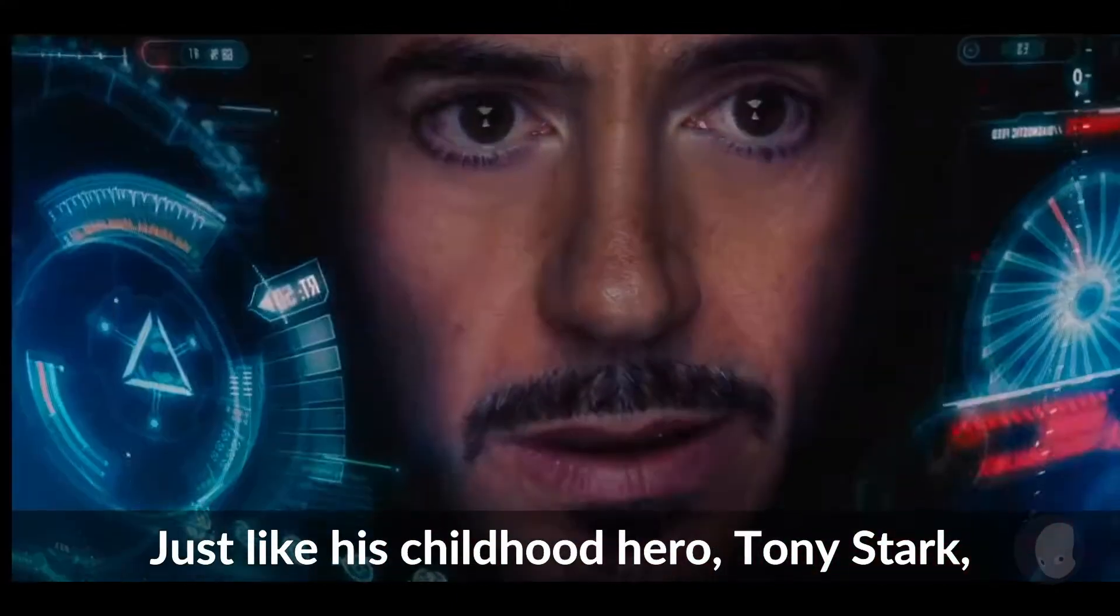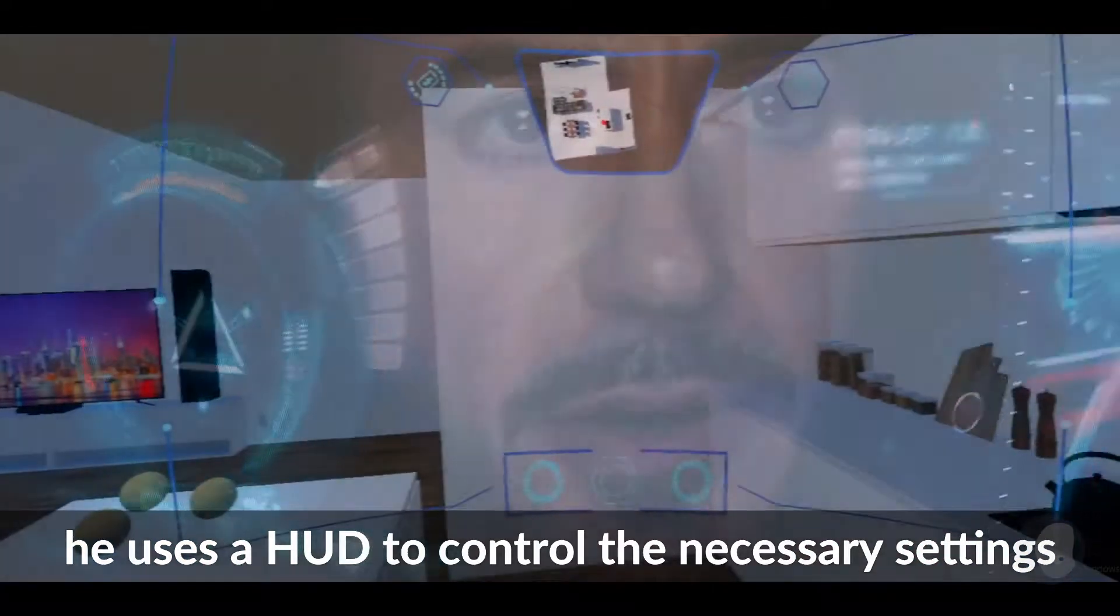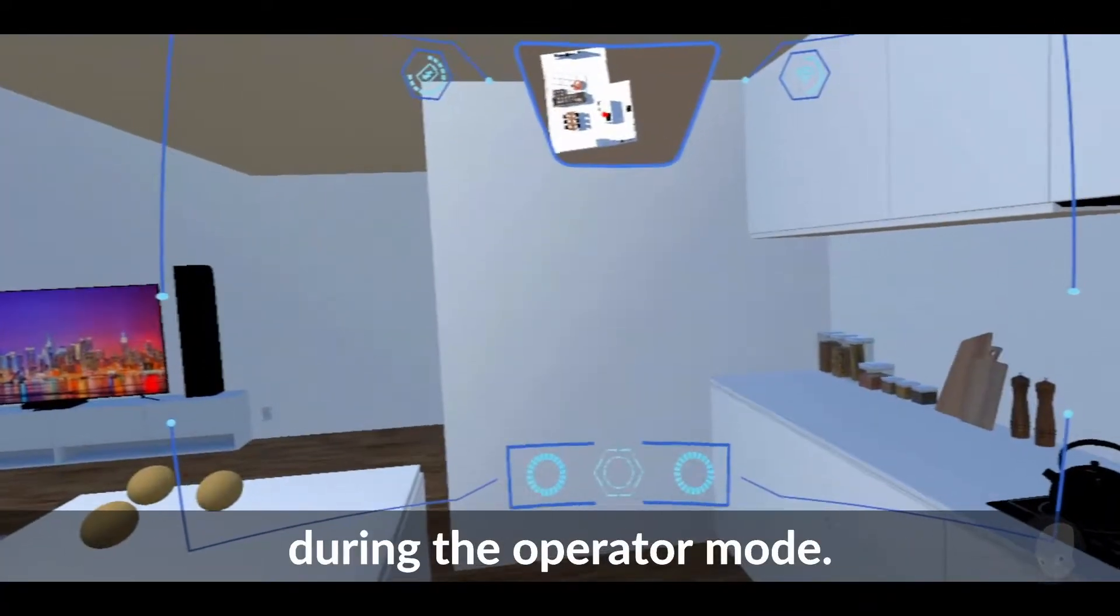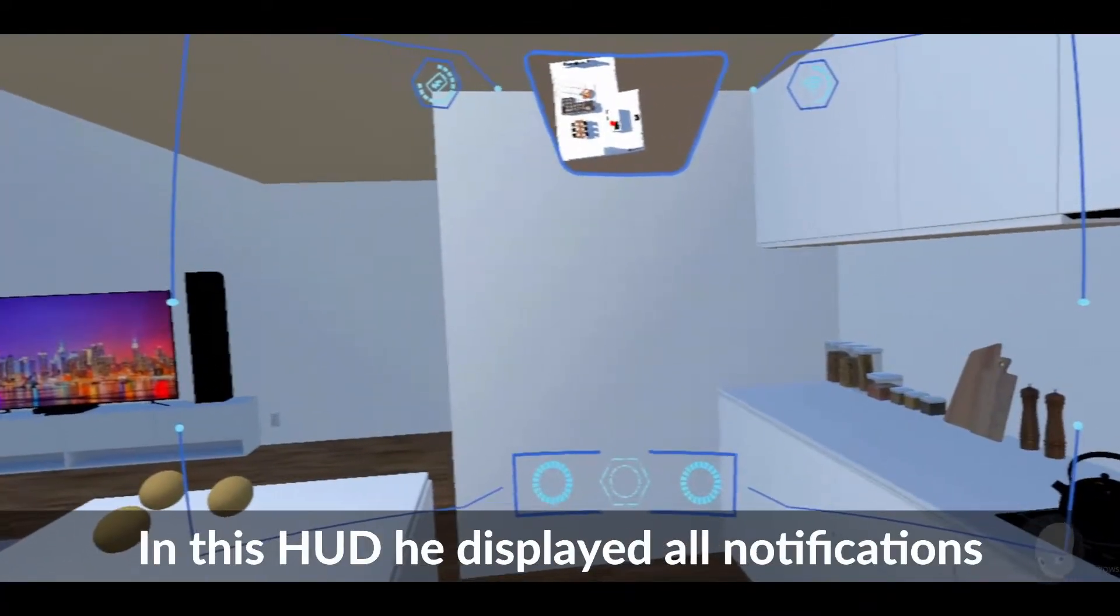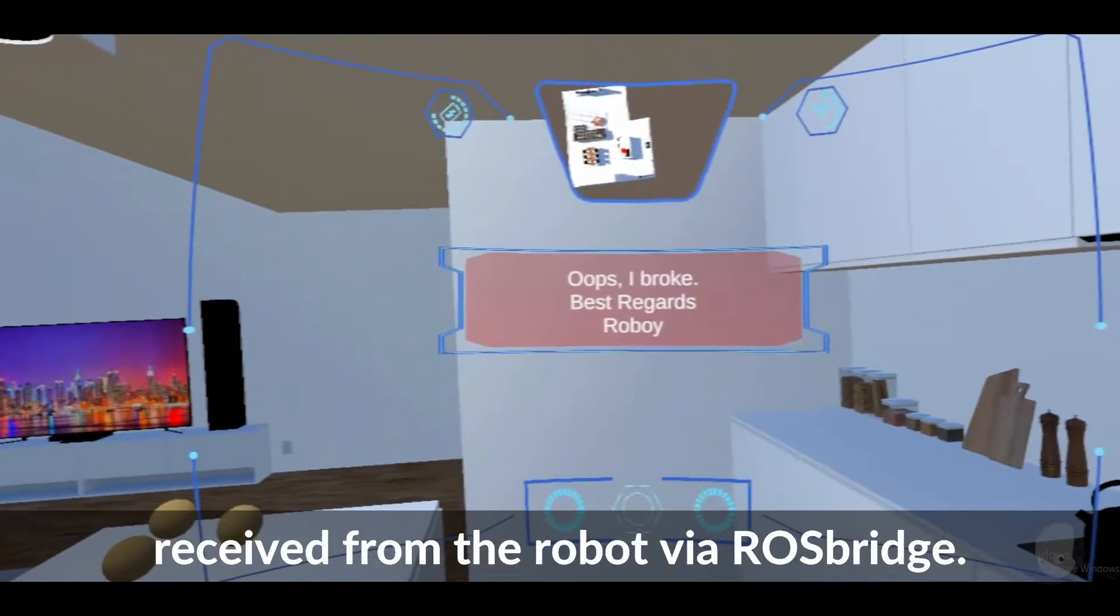Just like his childhood hero Tony Stark, he uses a HUD to control the necessary settings during the operator mode. In this HUD he displayed all notifications received from the robot via Rossbridge.